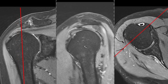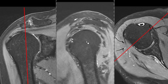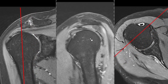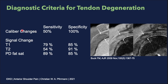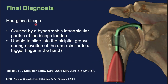So let's summarize our findings. We have a marked enlargement of the long biceps tendon, calibre changes, and signal changes in the long biceps tendon. The findings of calibre changes and signal changes are diagnostic for tendon degeneration or tendinosis. Especially the calibre changes have a very high specificity. However, we have a second finding: in our case, the marked enlargement of the biceps tendon is termed the hourglass biceps.